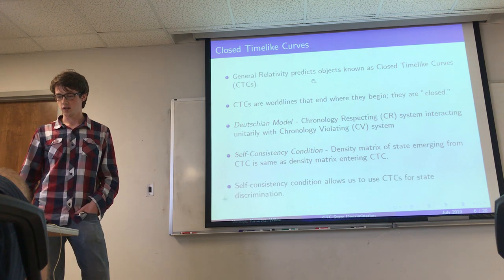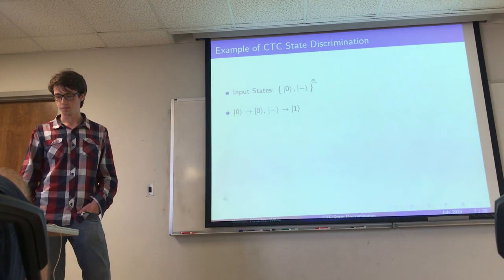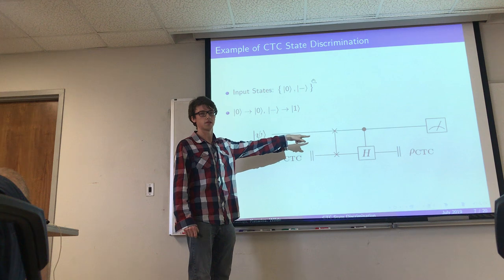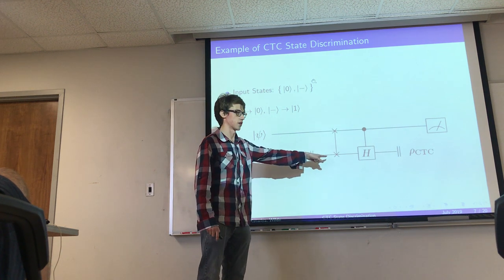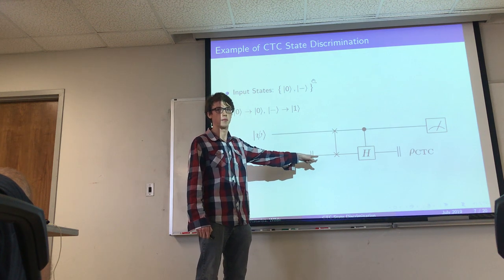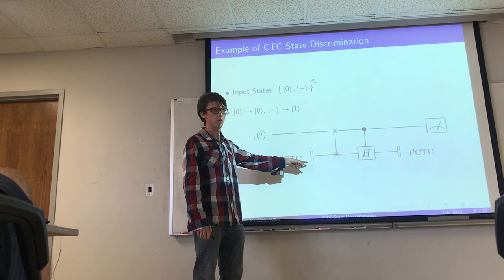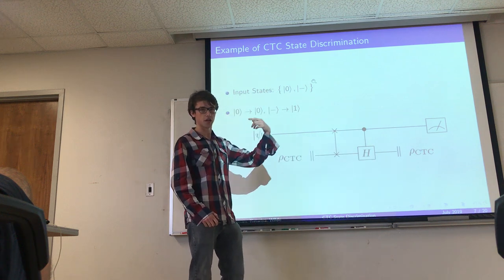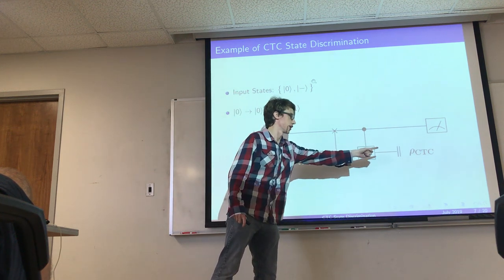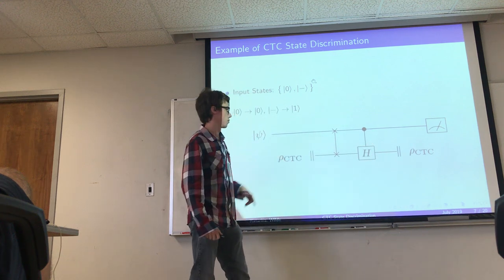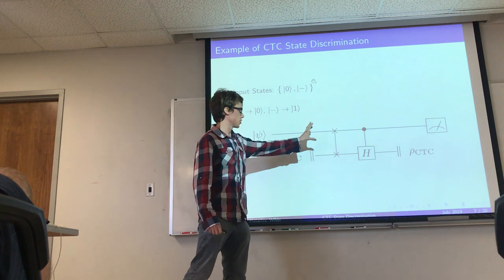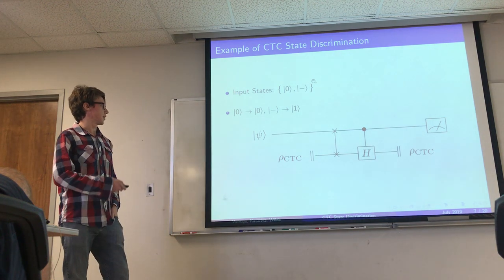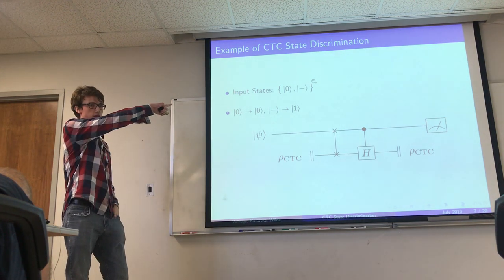To make this concrete: the top system obeys normal chronology; the bottom system travels along a closed timelike curve. The double bars on the left represent the past mouth of the wormhole — where the state emerges from the past — and the double bars on the right represent where the state goes into the future. You can think of the CTC state traveling in a time loop. In this case, the unitary interaction between the two states is a swap gate and a controlled Hadamard gate, and this circuit can be used to distinguish input states |0⟩ and |−⟩.